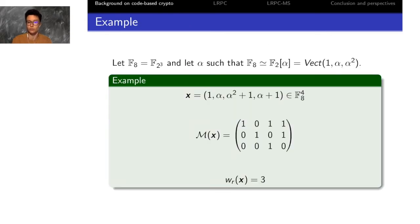To give a short example, we will place ourselves in the field F8 with the canonical basis 1, α, α². For the example of a word with 4 coordinates 1, α, α²+1, α+1, we have written on the slide the unfold matrix of x.